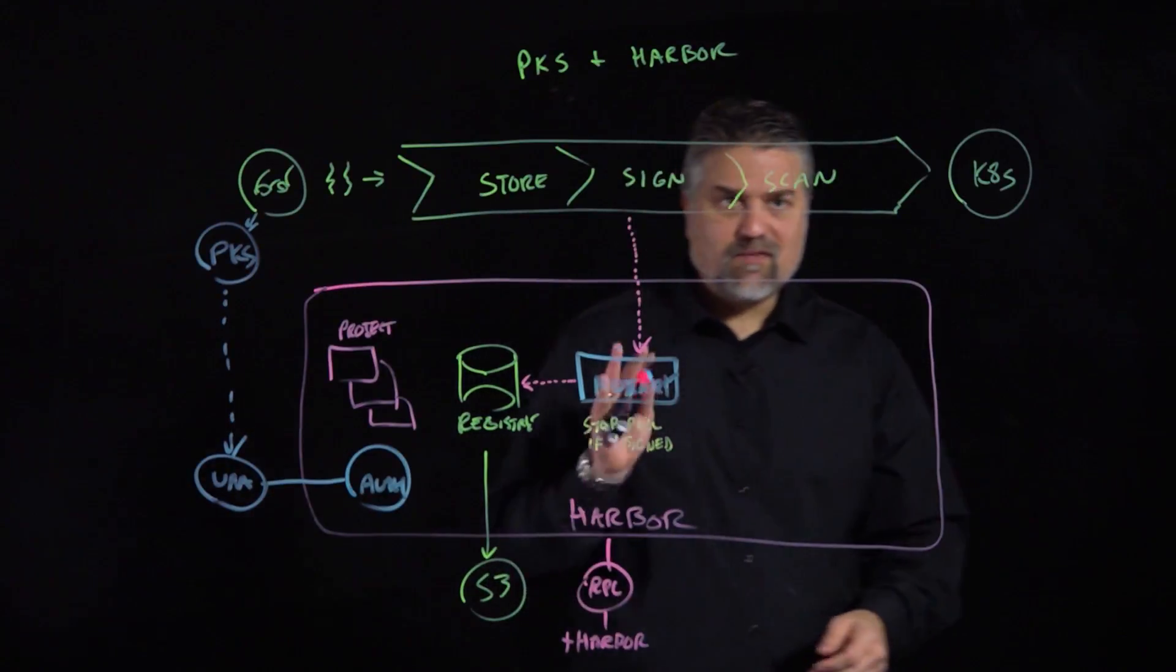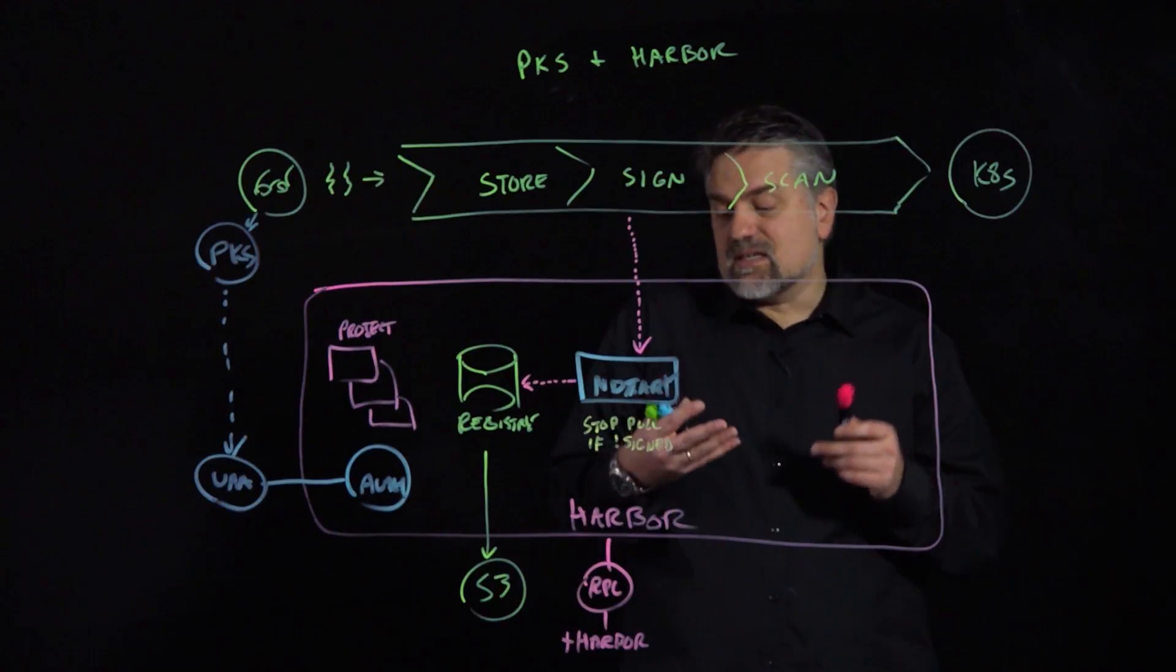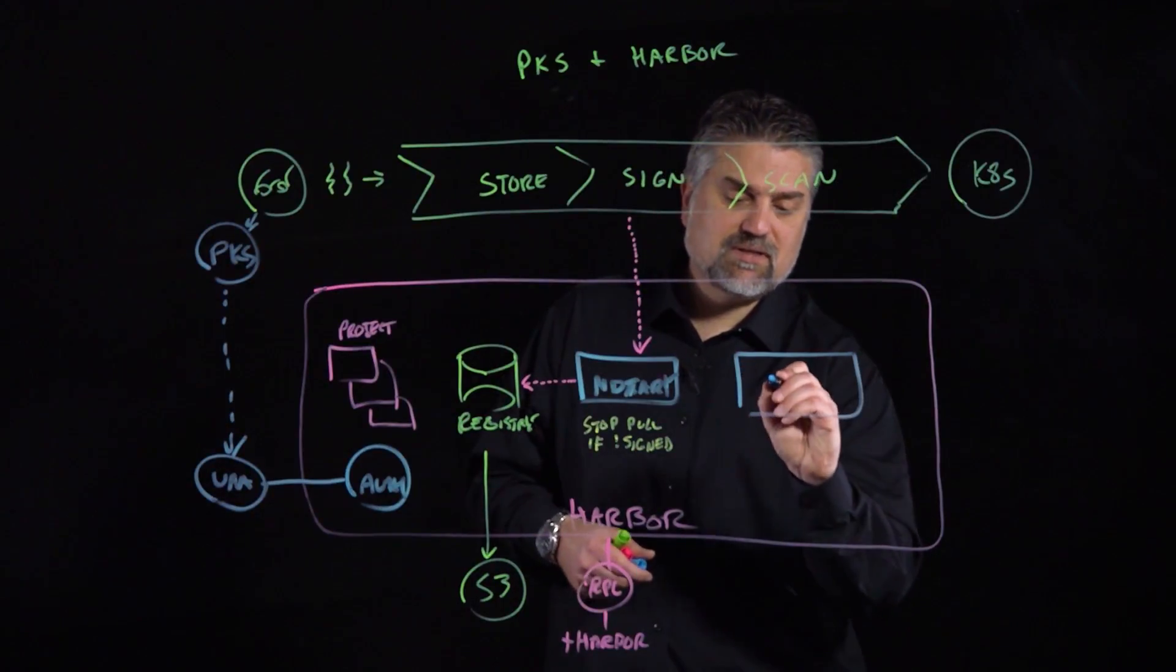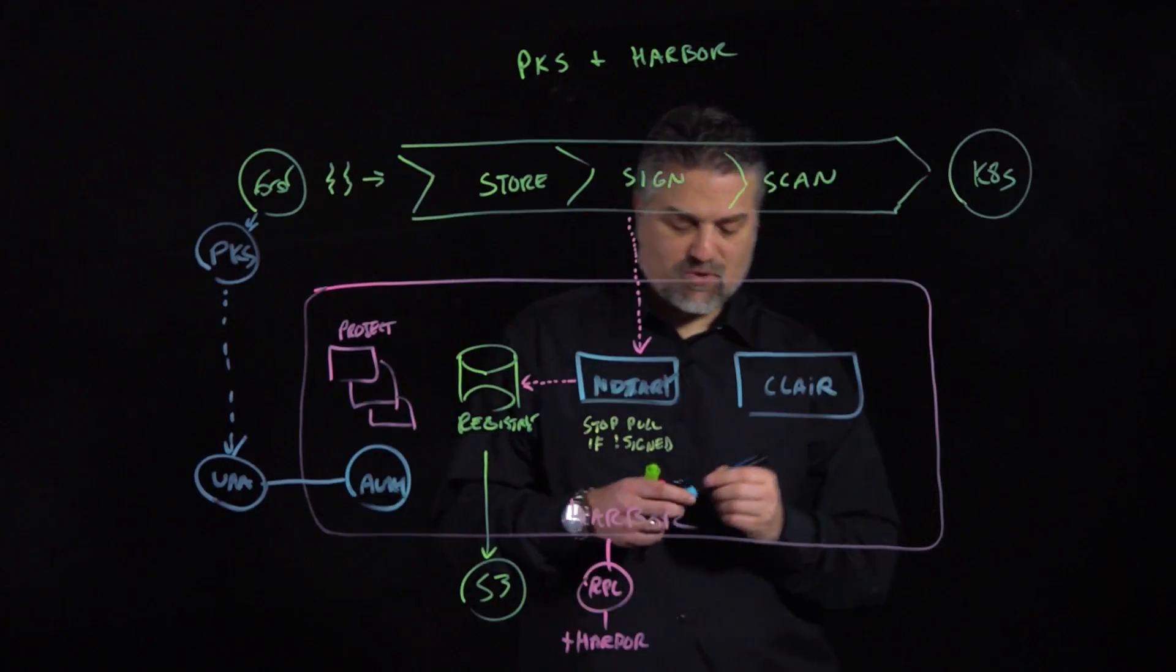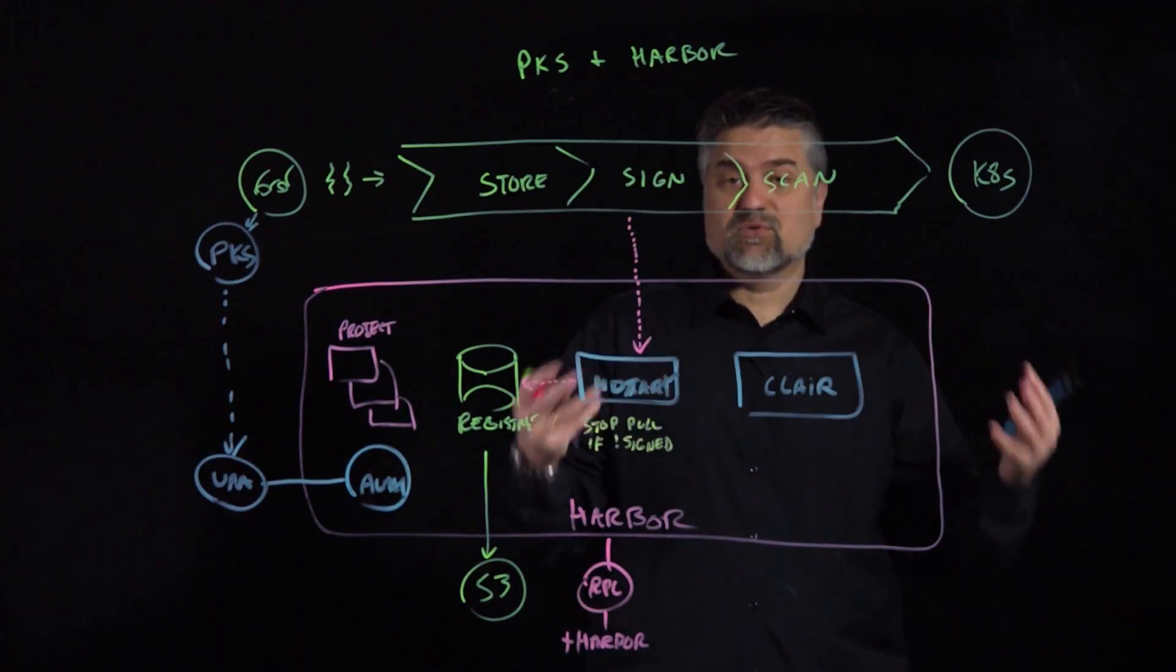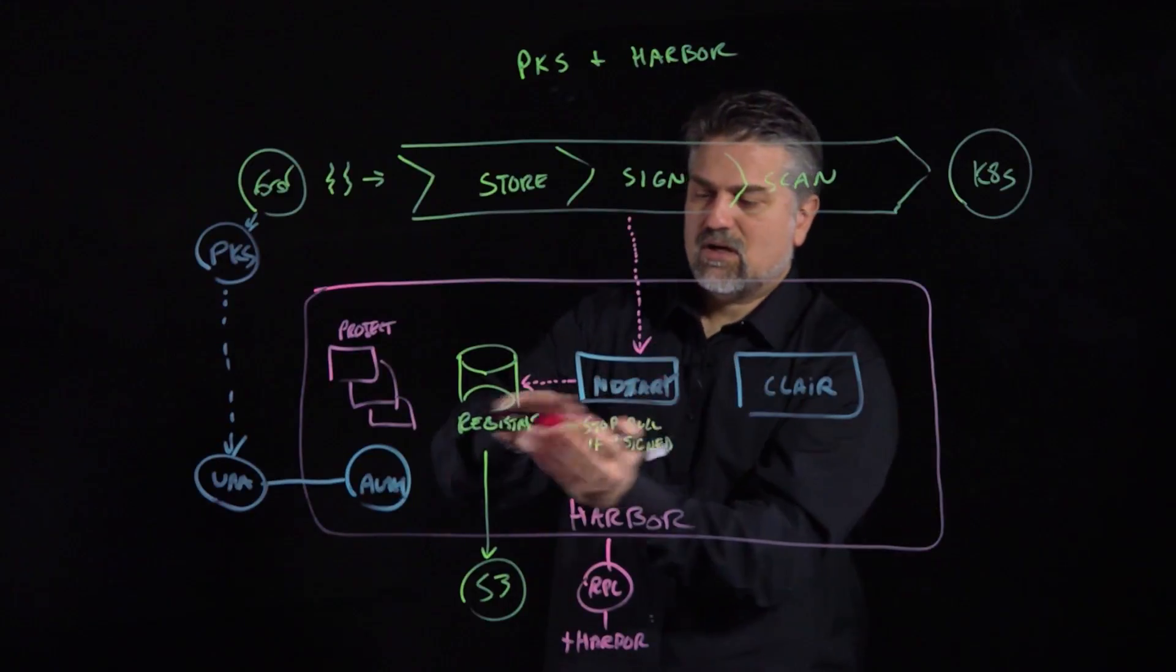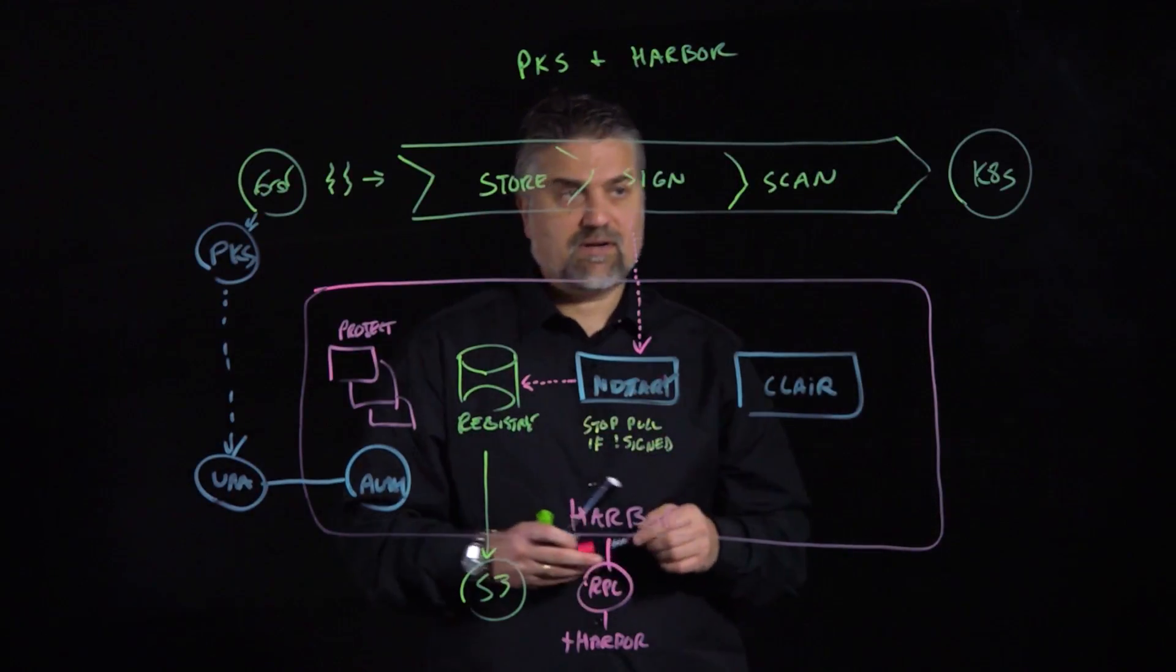But it's not just about where the image came from that we need to be concerned. It's also about is the image safe? Has the image been built with any known vulnerabilities? So, another component that's included inside of Harbor is Clare, which is an open source initiative that has multiple repositories of known CVEs, known critical vulnerabilities.